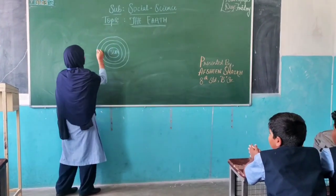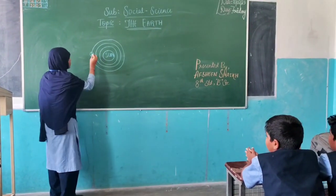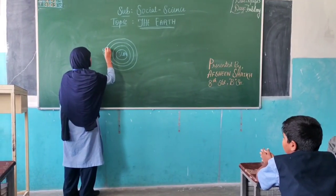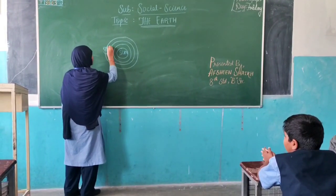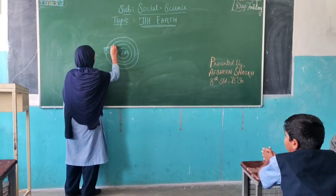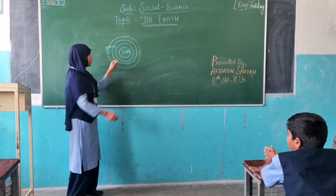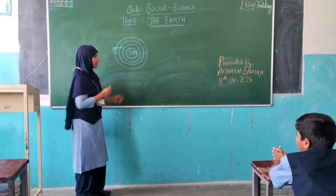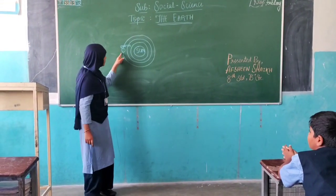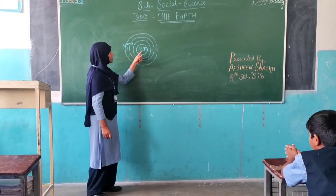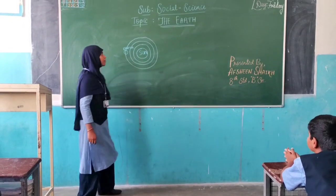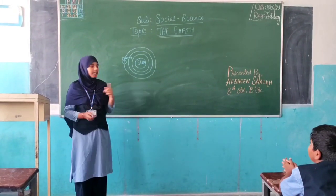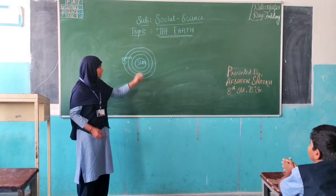The Earth comes under the third orbit. This is Earth. So this is the Sun and the Earth comes under the third orbit. That's why it is called the third planet of the Sun's family. The nine planets are the family of the Sun.